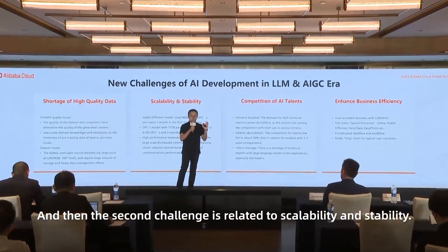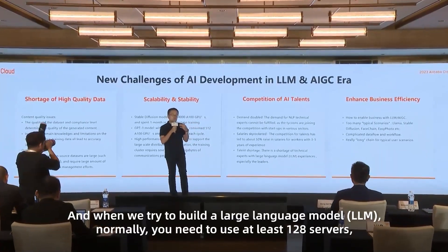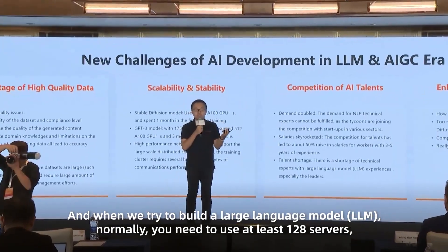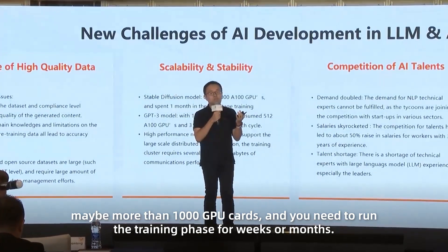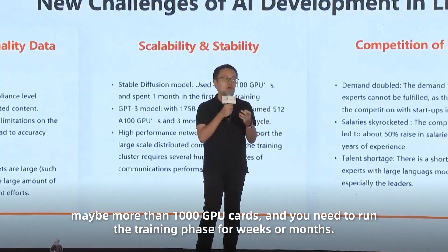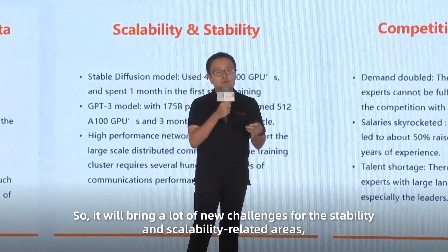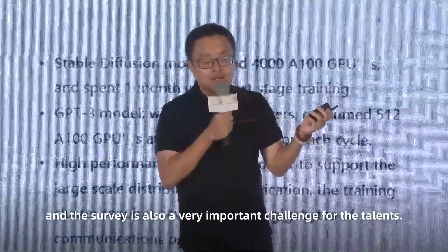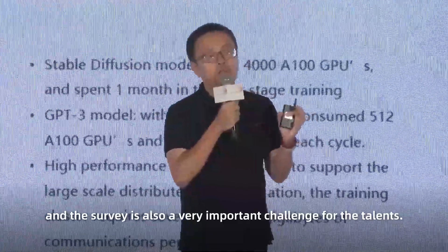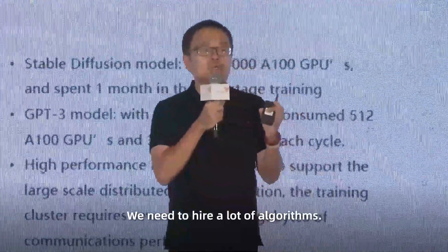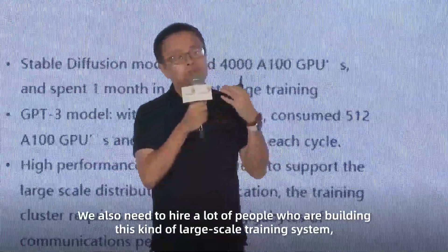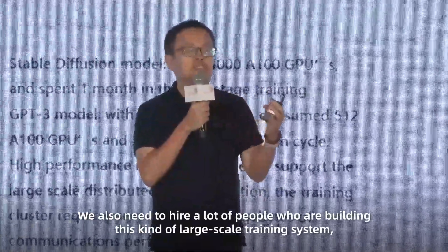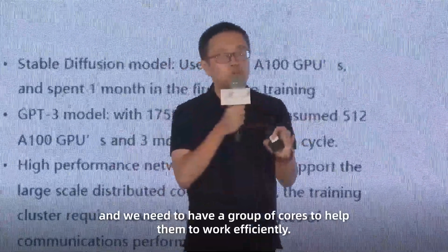The second challenge is related to scalability and stability. When you try to build a large language model, you normally need to use at least 128 servers, maybe more than 1,000 GPU cards, and run the training phase for weeks or months. The third challenge is about talent — we need to hire algorithm engineers and people building large-scale training systems, and provide tools to help them work efficiently.